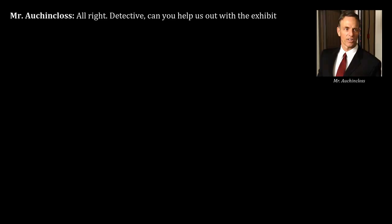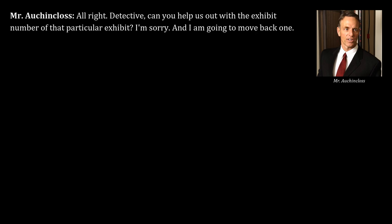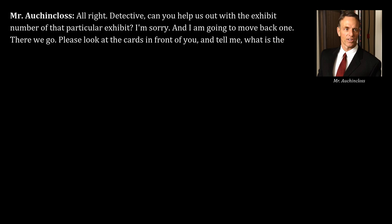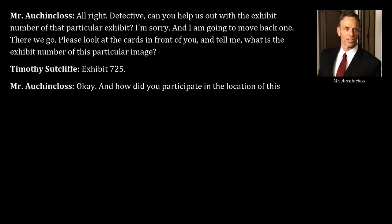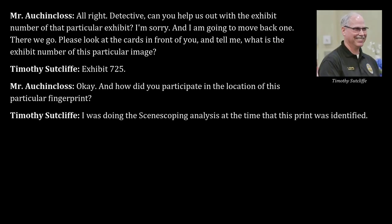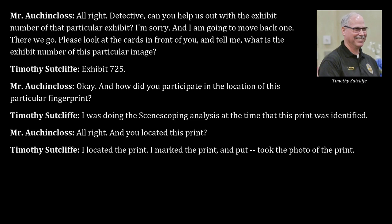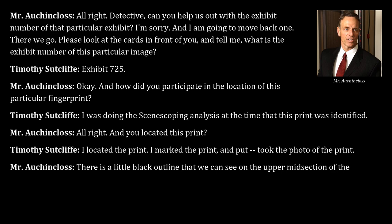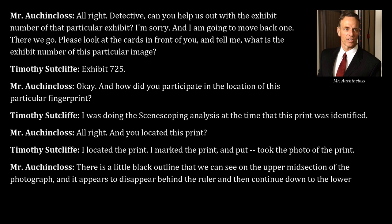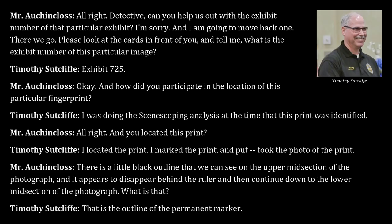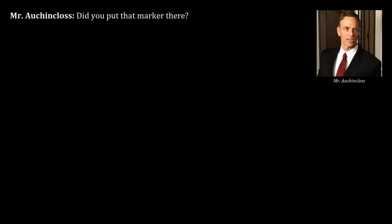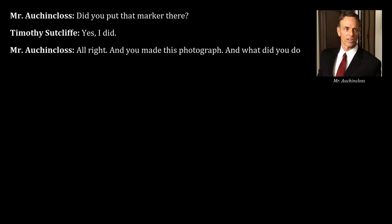Walking through exhibit 725, the detective explains he was doing the scene scoping analysis when the print was identified, located the print, marked it, and took the photograph. A black outline visible in the upper midsection of the photograph, disappearing behind the ruler and continuing to the lower midsection, is the outline drawn with the permanent marker.